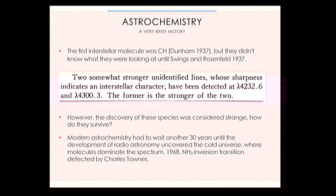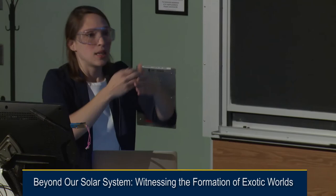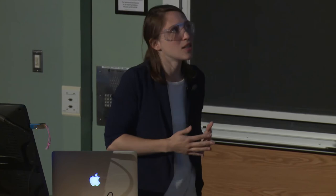The first interstellar molecule was actually discovered in 1937, but they didn't know what it was — just a very narrow line. It didn't look like a line from a star, which is typically broad due to stellar pressure. They indicated an interstellar character. Shortly thereafter, in the same year, someone identified it through spectroscopy as CH — the first molecule detected freely floating in space, seen in intervening gas along a line of sight to a star.